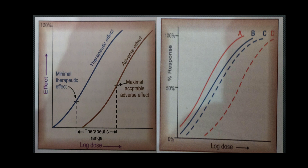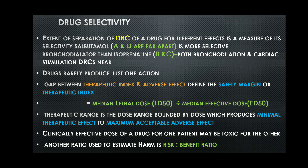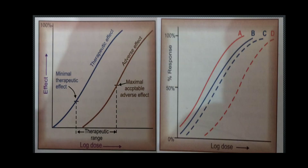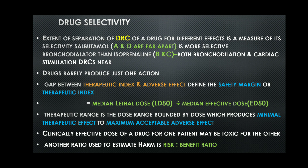Curve A represents bronchodilation and curve D represents cardiac stimulation for salbutamol. Since A and D are far apart, at a low dose of salbutamol you primarily get bronchodilation (curve A). For isoprenaline, curves B and C are close together, meaning it produces similar curves for both bronchodilation and cardiac stimulation, so it is less selective.